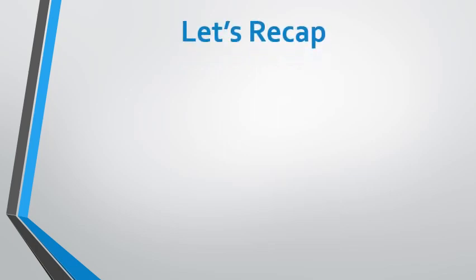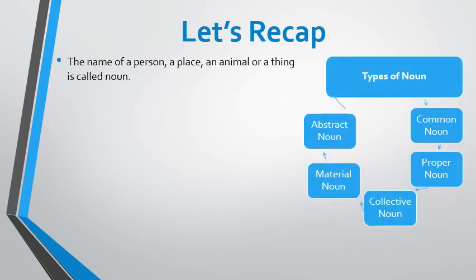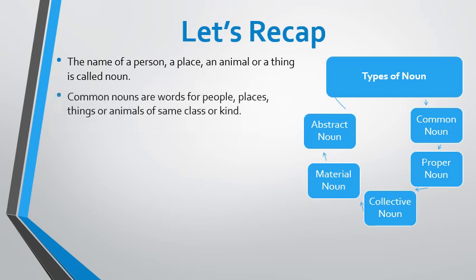Now we are going to recap what we have done in both sessions on nouns. The name of a person, a place, an animal, or a thing is called a noun — that is the definition of noun. You should always remember it. In class 4, we do five types of nouns: common noun, proper noun, collective noun, material noun, and abstract noun.